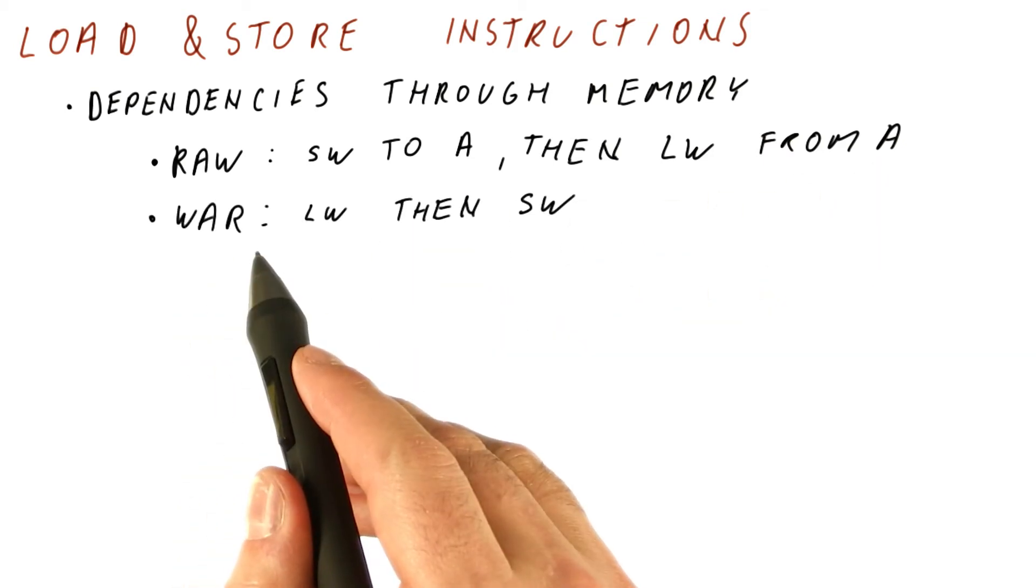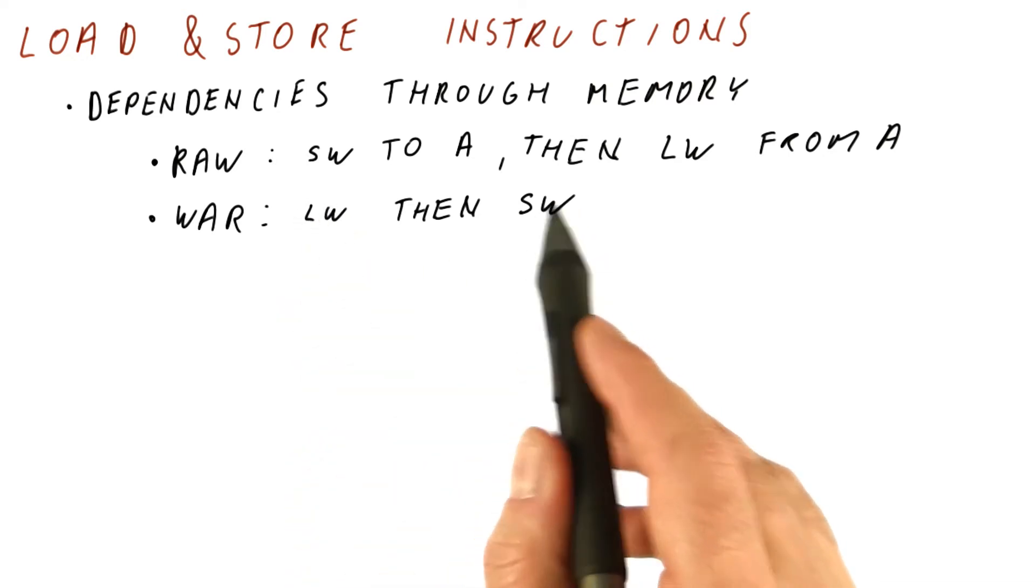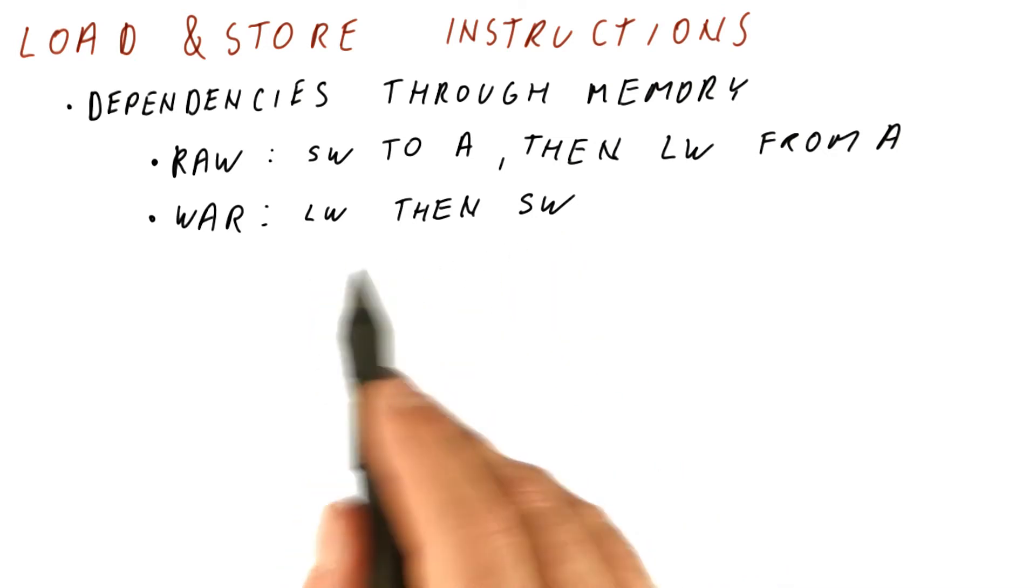We can also have a write-after-read false dependence. For example, we can have a program that first needs to load something then store it. If we reorder this, the load gets a value from the store, not the value from before.